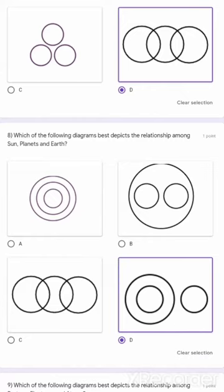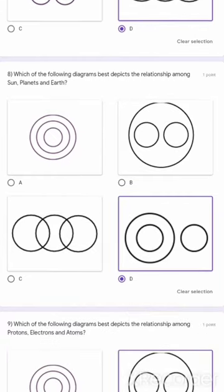Sun, plants, planets, earth. Sun is one of the stars. Earth is one of the planets.